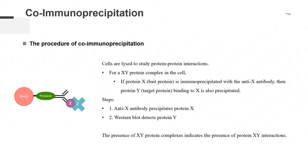When cells are lysed, many of the protein-protein interactions that exist in intact cells are preserved. If there is an XY protein complex in the cell, the bait protein X is immunoprecipitated with an anti-X antibody. Then the target protein Y, bound to X, is also precipitated. Therefore, anti-X antibody is added to the cell lysate to precipitate protein X, and then western blot is used to detect the presence of protein Y in the precipitate. The presence of the XY protein complex in the cell then indicates the presence of protein XY interactions.